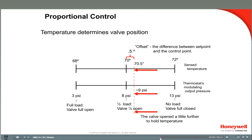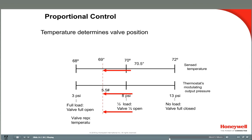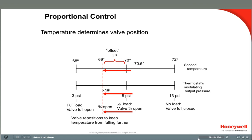If the heating load increases further and the room temperature drops to 69 degrees, the bleed rate will increase, and the branch line pressure will drop to about 5.5 pounds, causing the valve to open to about three-quarters open. This increases the rate of BTU transfer into the room to replace the BTU loss that caused the temperature to fall to 69 degrees. We now have a 1-degree offset. Proportional control matches heat replacement to heat loss and is best for large buildings where temperature changes slowly. With the correct throttling range, the offset seldom gets more than 1 degree above or below set point.